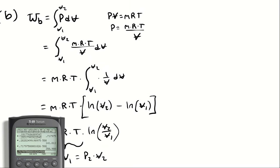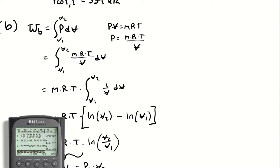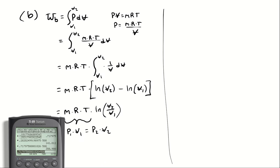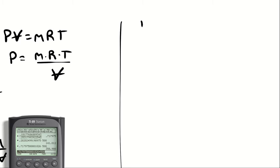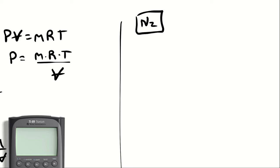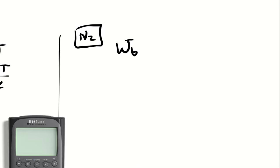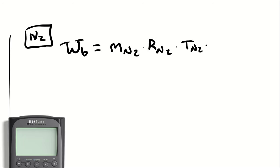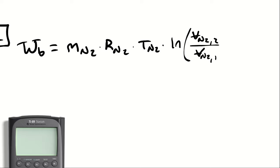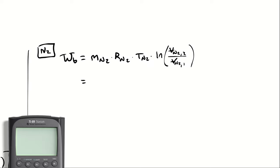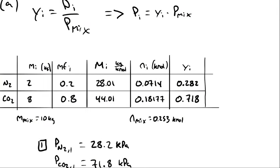We have two approaches: figure out the work to compress the nitrogen, the work to compress the carbon dioxide, and add them together — or figure out the work to compress the entire mixture all at once. For character building, let's try both methods. We'll first find the work to compress just the nitrogen, then the CO₂, and then analyze the entire mixture.